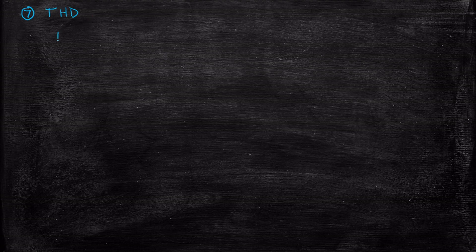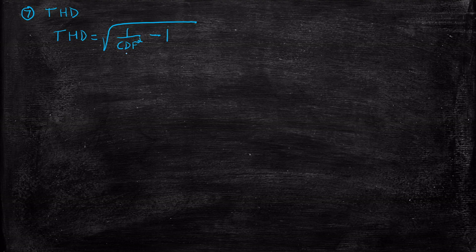Now let's look at the total harmonic distortion, THD. By definition, THD = √(1/CDF² − 1). Substituting the expression for CDF, you get: THD = √((π · (π − α)) / (8 · cos²(α/2)) − 1).